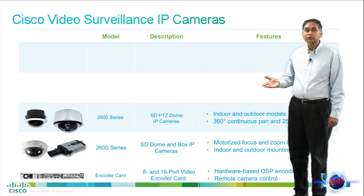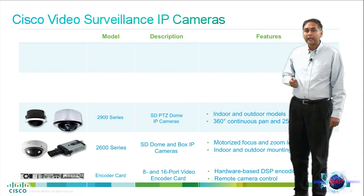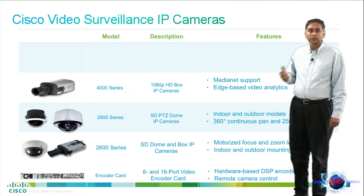The 2900 series is our standard definition PTZ camera line. There are two principal models: an indoor dome that is ceiling mounted and has 28x zoom, and an outdoor pendant with 35x zoom. These cameras can also be used as analog cameras, and therefore there's a PAL and NTSC version of each camera.